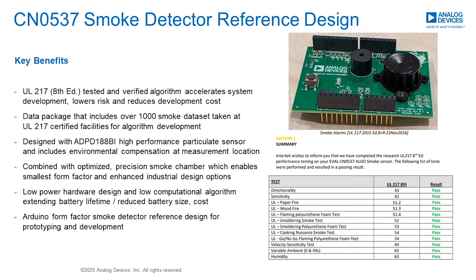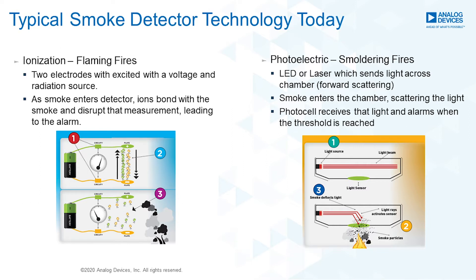Typically smoke detectors today use either ionization, photoelectric, or a combination of both technology types to sense smoke events. While each technology has its strengths when it comes to fire detection, it's difficult for either to be able to pass the updates in 217 by themselves. That's where the ADPD188BI comes in.